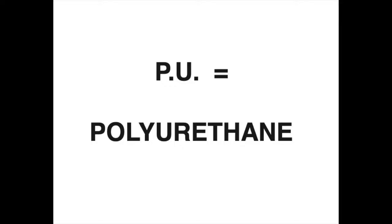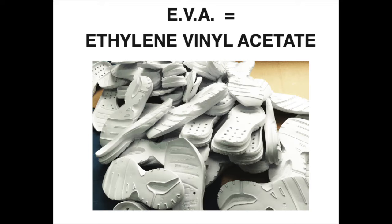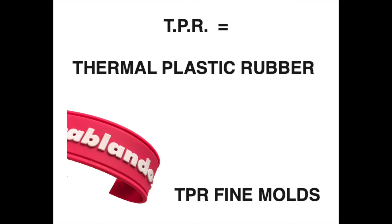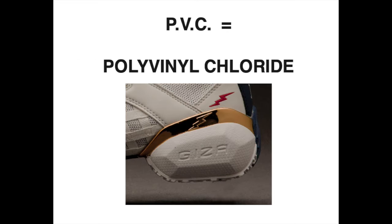I want to go back over some acronyms we used on the last episode. We talked about PU — polyurethane — used on the upper and also in the midsole in certain cases. I also mentioned EVA — ethyl vinyl acetate — the standard for most midsoles, which are compression molded. Then TPR — thermoplastic rubber — for fine mold patches. Finally, PVC — polyvinyl chloride — a rigid plastic that can be used for stabilizers, eyelets, and other places, usually in smaller molds.